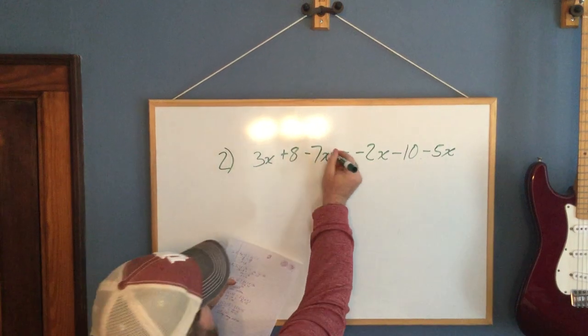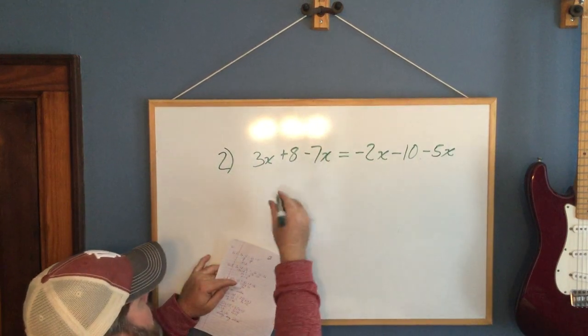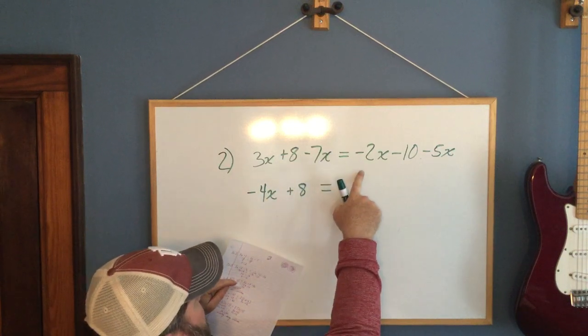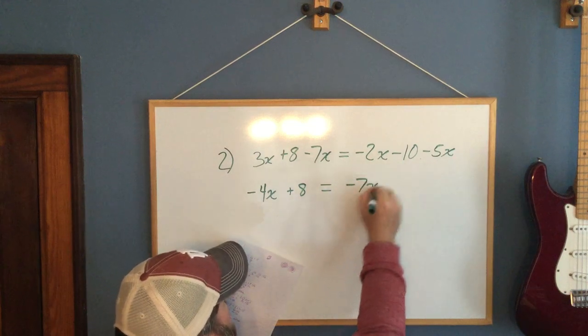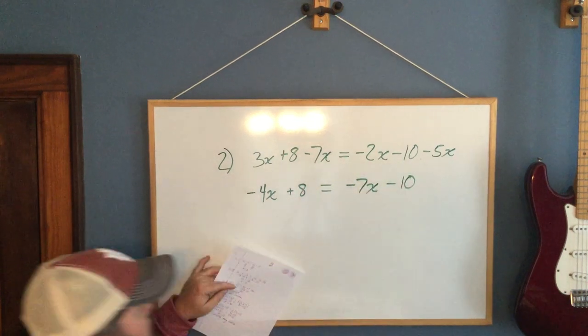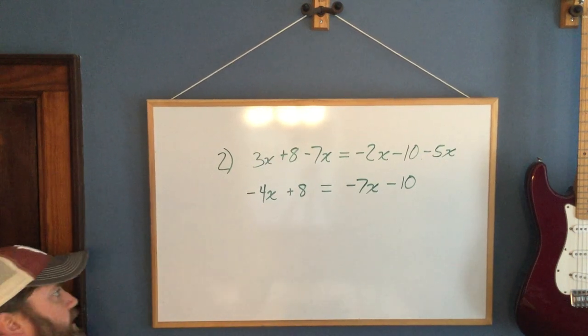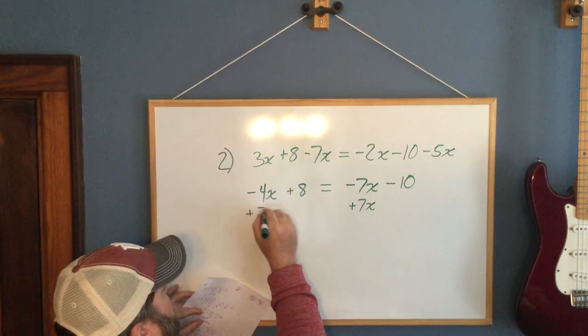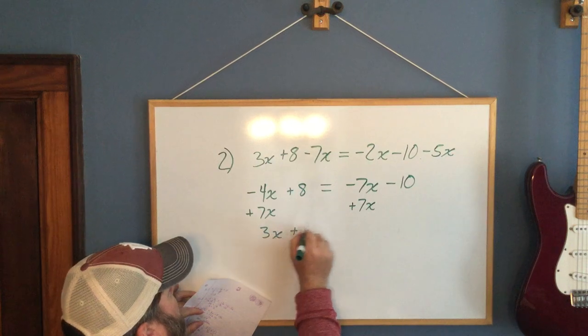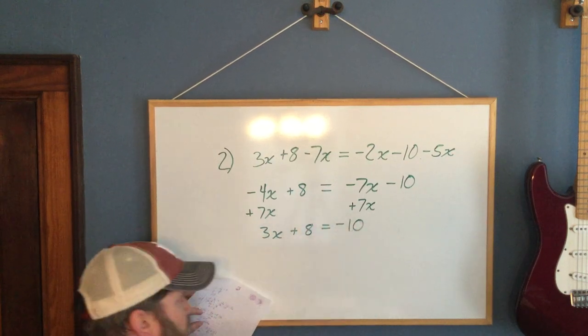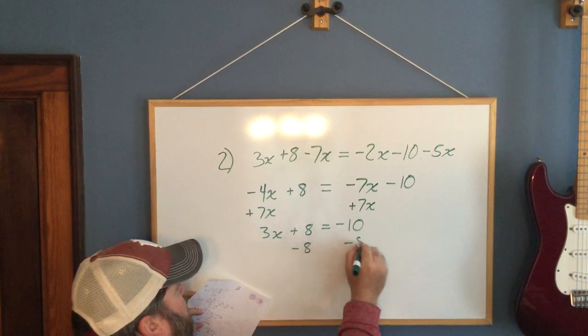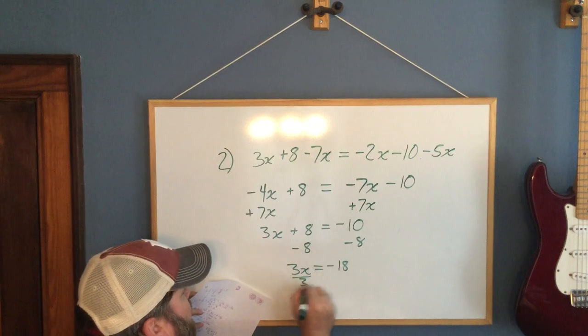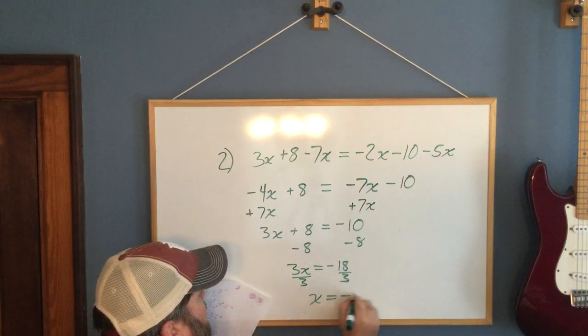So now I'm going to simplify. 3x minus 7x is negative 4x. I'm going to drop down to plus 8. Negative 2x minus 5x is negative 7x. Drop down to minus 10. Again, I'd get rid of a variable first. I'm going to get rid of negative 7x by adding 7x. So now I have 3x plus 8 equals negative 10. Get rid of my constant. 3x equals negative 18. Divide by 3. And x is negative 6.